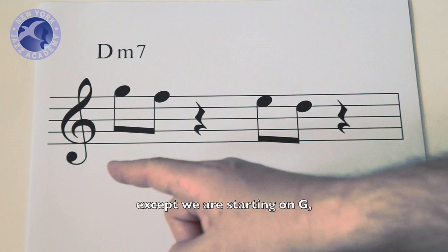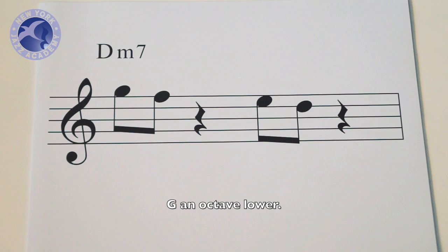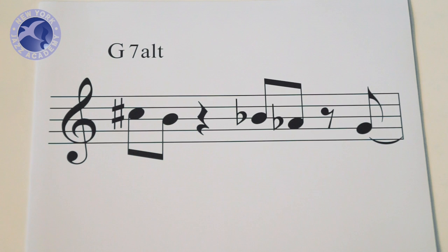We're going to start with a G. Now this is the D diminished scale, except we're starting on G, and we're going to descend all the way down to G an octave lower. Let's give it a listen.